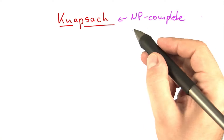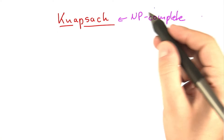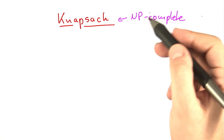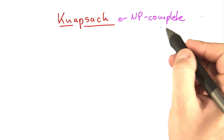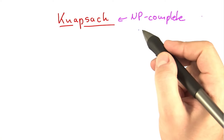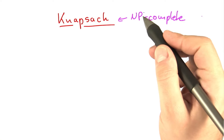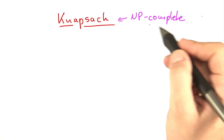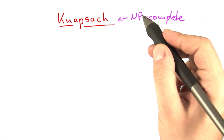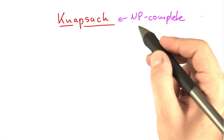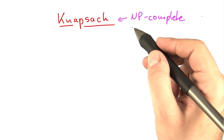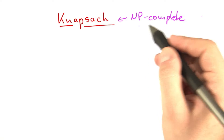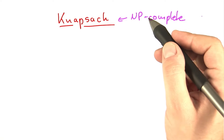Knapsack is a very interesting problem because, in a way — and this is very informal, of course — it is among the easiest NP-complete problems. So whereas clique and independent set, for example, seem to be very difficult, Knapsack allows for some pretty interesting algorithms.